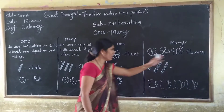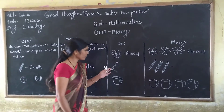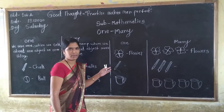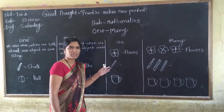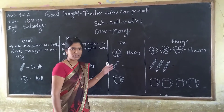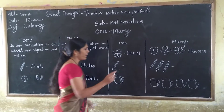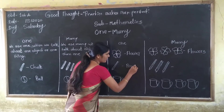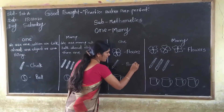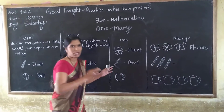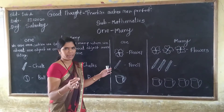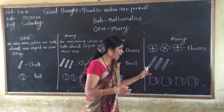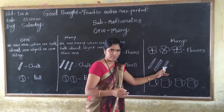What is this? This is a pencil. How many pencils? This is only one pencil. P-E-N-C-I-L. This is only one pencil. And we count it: 1, 2, 3.